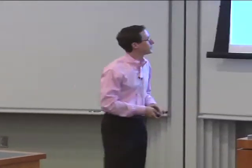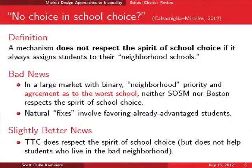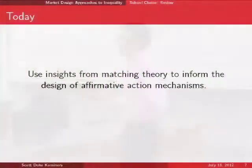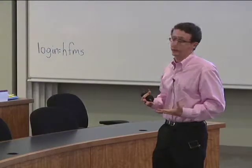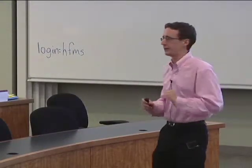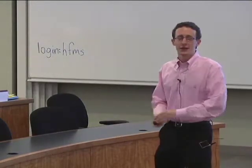We ended with a story where, for a particular stylized model, no mechanism used a lot — neither the student-optimal stable mechanism nor the Boston mechanism — actually enables any choice for students in bad neighborhoods. They get stuck. Even top trading cycles keeps all students in the bad neighborhood there. So that's where we start thinking about other interventions. Today we'll learn what matching theory has to say: if we want to explicitly favor students of some type, what can we do, and can we do it in a strategy-proof way?